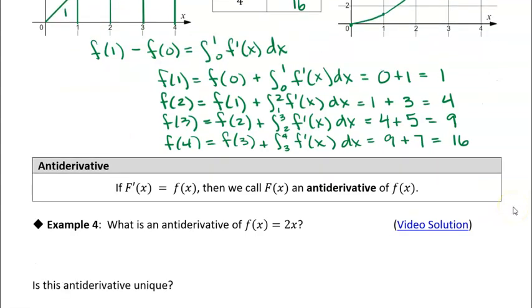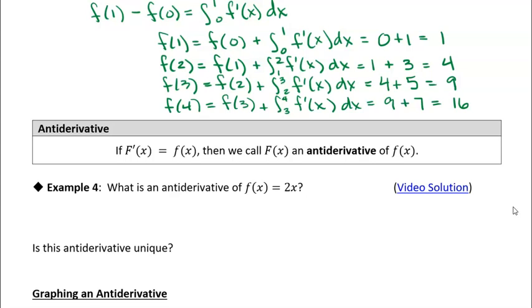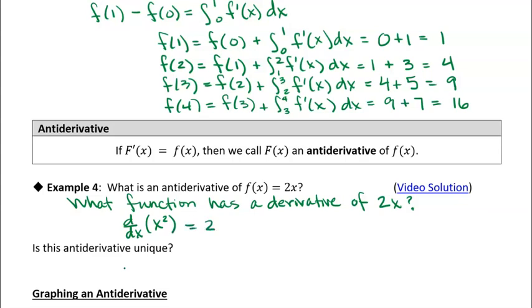While we're on that topic, let's do example 4 as well. What is an antiderivative of 2x? This is just asking what function has a derivative of 2x. We know that the derivative of x² - we can write d/dx of x² - is 2x. So that means x² is an antiderivative of 2x.